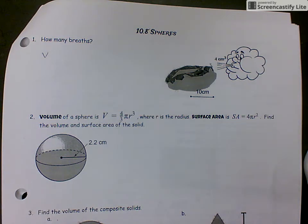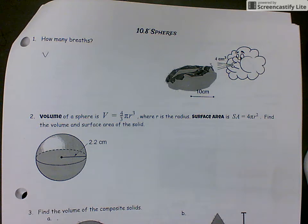Question number two: the volume of a sphere is V = 4/3πr³ where r is the radius, and surface area is SA = 4πr². The nice thing about these formulas is all we have to know is the radius. Once we know the radius, we can plug it in and get all the answers we need. Let's find the volume and surface area of the solid.